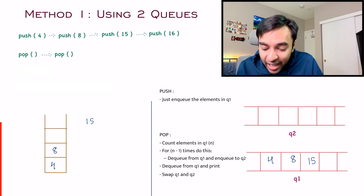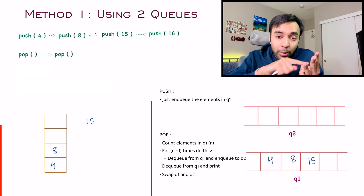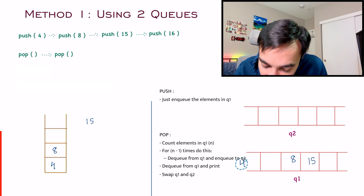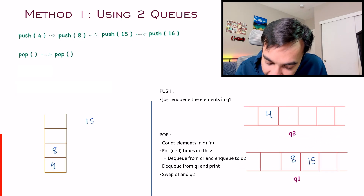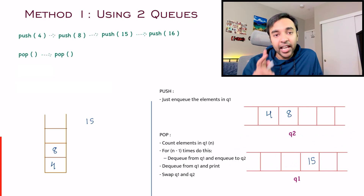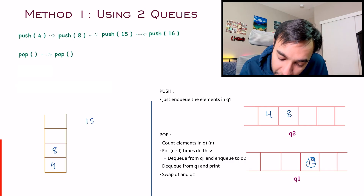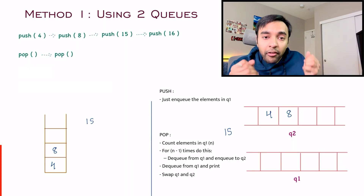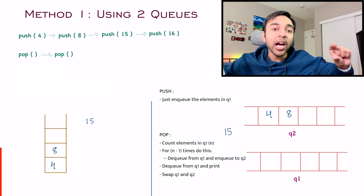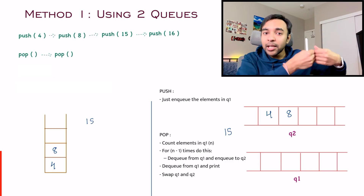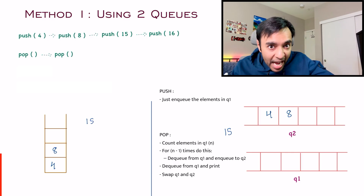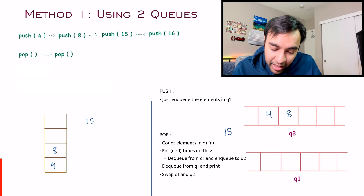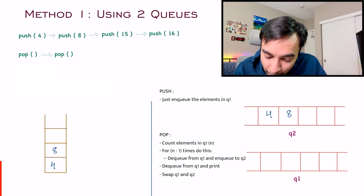Q1 has 3 elements. So for doing a pop, we perform the traversal again n-1 times, that is 2 times. We take out an element from the queue and push it into the other queue. We do this operation twice. Now pop out the element — you get a 15. So once again, you've mimicked your operations. After completing these operations, we swap Q1 and Q2 again. We do this swapping to keep the code consistent — always removing elements from Q1 and pushing onto Q2.